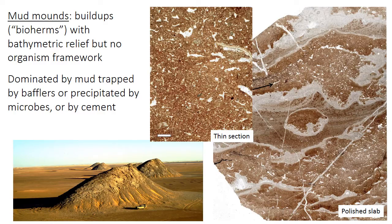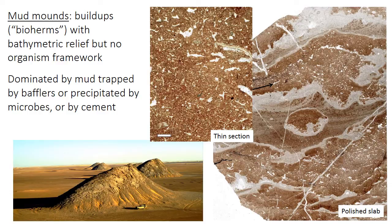A true reef must have a rigid framework built by organism skeletons, but there are also large structures with relief above the seafloor that are basically just mud — these are called mud mounds, dominated by mud presumably trapped by baffling organisms or bound by microbes. Both true reefs and mud mounds are types of a broader category called a bioherm: an unbedded, organism-built structure with relief above the seafloor. Bioherms include reefs with a framework built by organisms, as well as mounds with relief but no framework, dominated by binding or baffling.